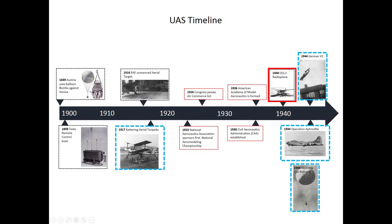In September 1939, Germany invaded Poland and World War II began. Once again, manned aircraft played an important part on both sides of the conflict. While the United States remained neutral in the early years of the war, it did realize that it wasn't prepared if it did need to enter the war. In order to train pilots and gunners for aerial combat, the United States needed an aerial target for them to practice on.